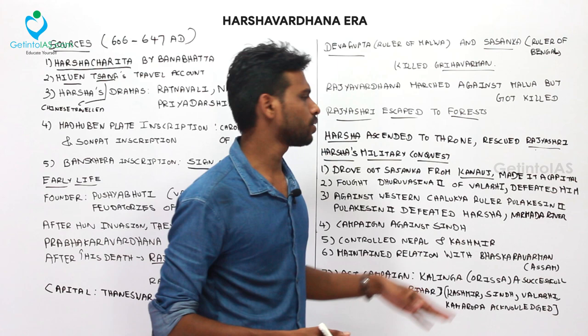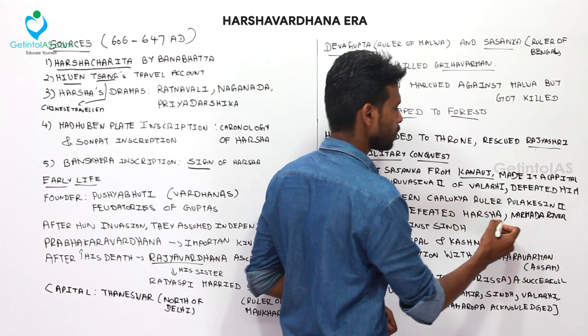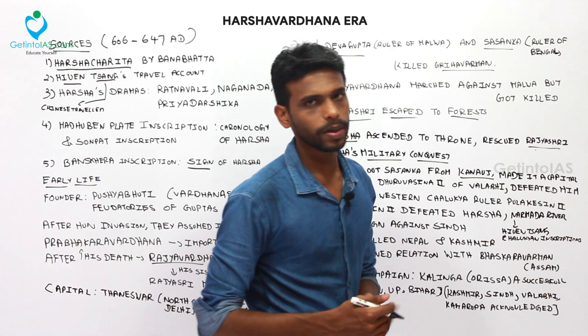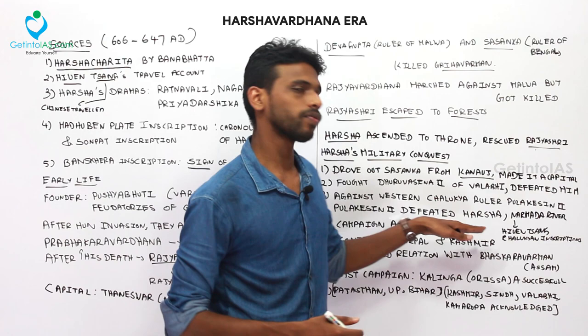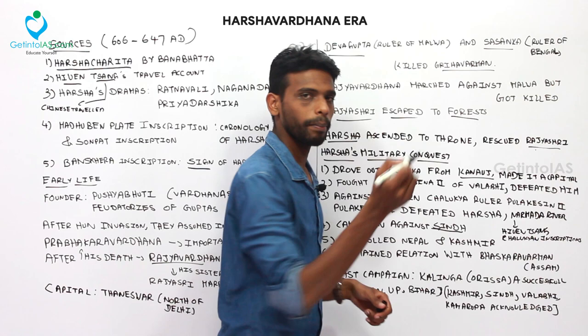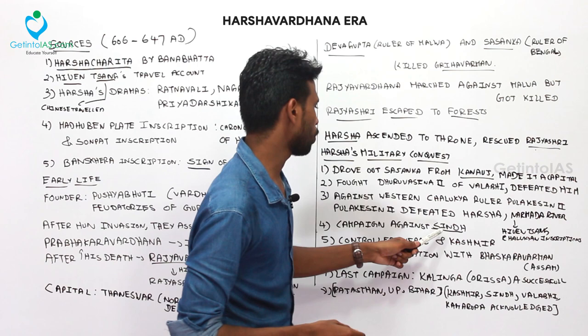This event has been mentioned both in the Chalukya inscriptions as well as Xuanzang's accounts. This was one of the greatest defeats of Harsha. He also campaigned against Sindh, but not much historical evidence is available regarding that campaign's outcome.